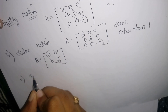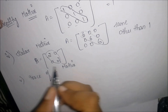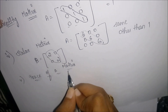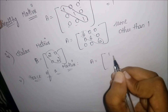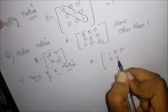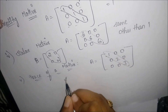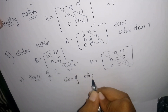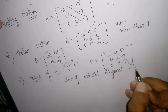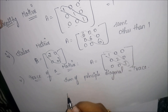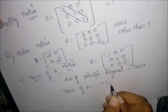The next topic is the trace of a matrix. The trace of a square matrix is the sum of its principal diagonal elements. Here, the sum of the principal diagonal elements is three plus two plus one, which equals six. So six is the trace of the matrix.